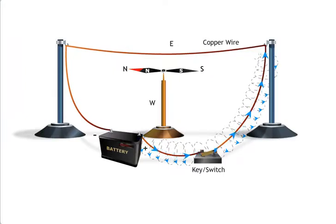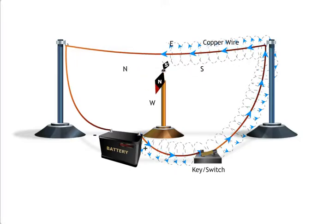However, when current passes through the wire from the south to the north, the needle deflects to the west.